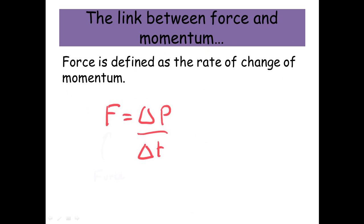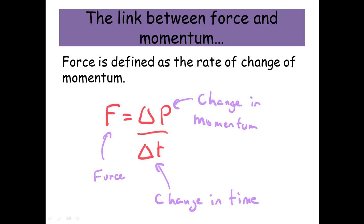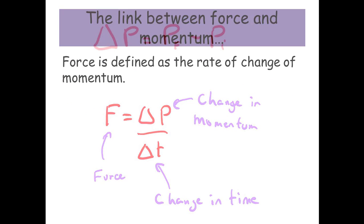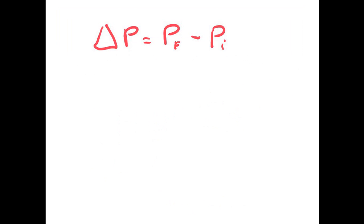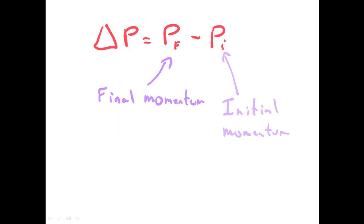Here's force in newtons, we've got our change in momentum, and then we've got our change in time. Remember, the change in momentum is equal to the final momentum minus the initial momentum. But what is momentum? Well, it's mass times velocity.